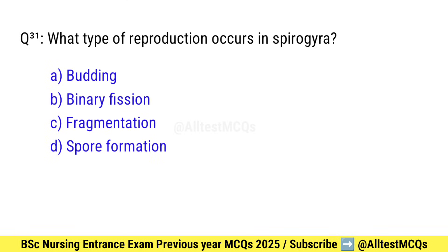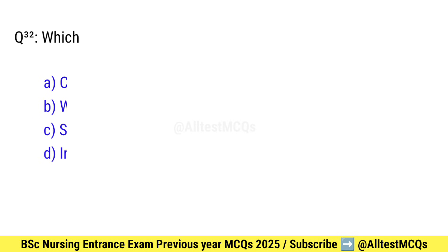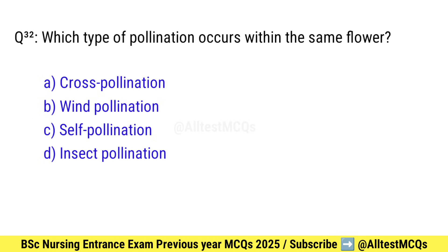Question number 31. What type of reproduction occurs in spirogyra? Correct option is C: Fragmentation.